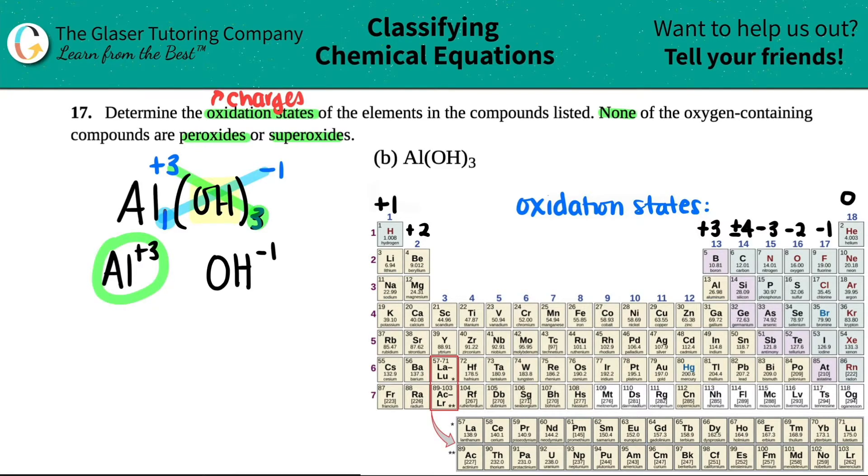Does this aluminum match up with what the oxidation states tell me? Yeah, aluminum's over here and it looks like it's in group 13 or three A. It's a plus three. So this checks out. We found one of them.